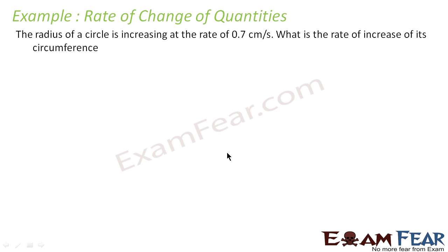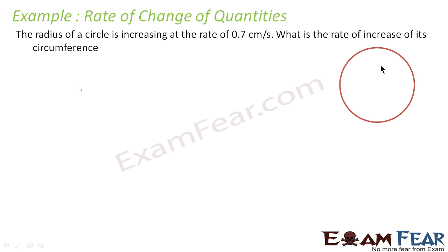The radius of a circle is increasing at the rate of 0.7 cm per second. What is the rate of increase of its circumference? This is our circle, and as per the question, the radius of the circle is increasing.